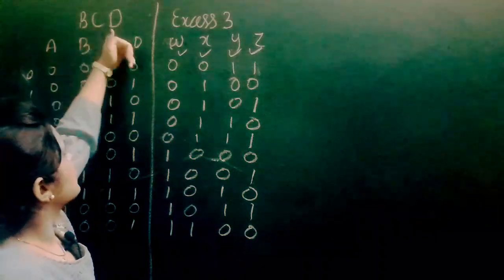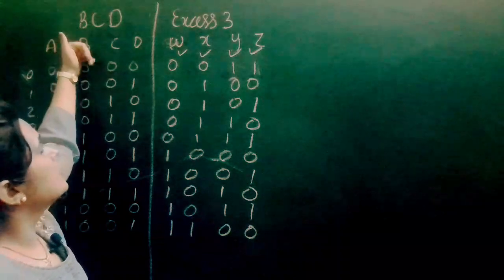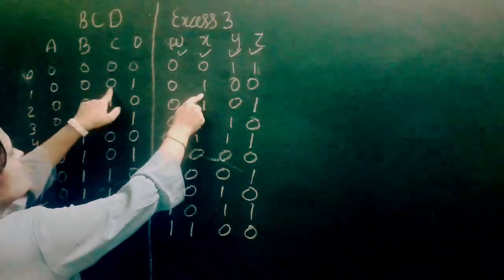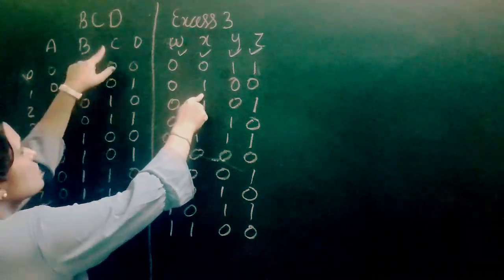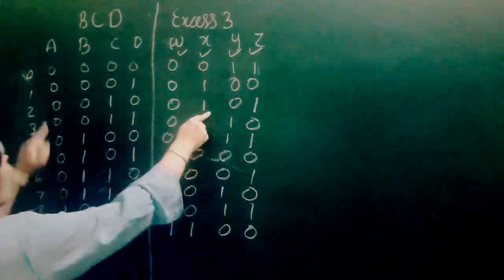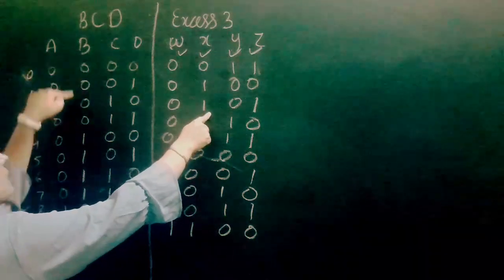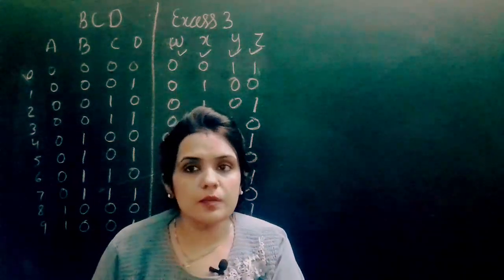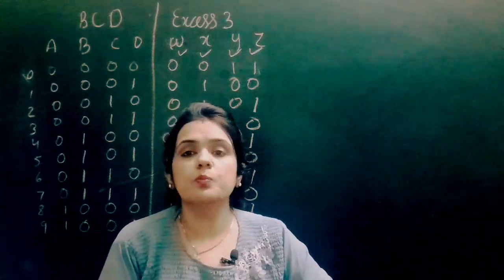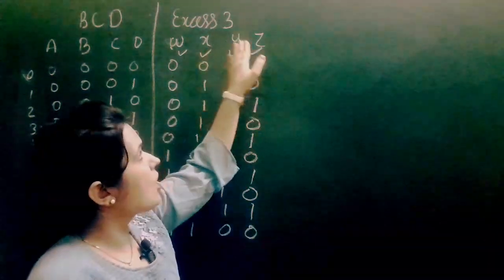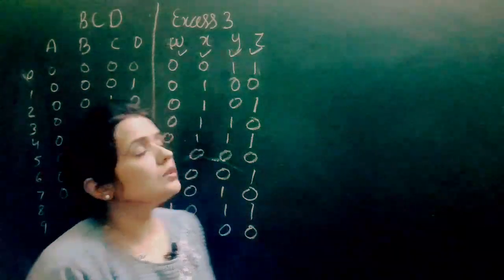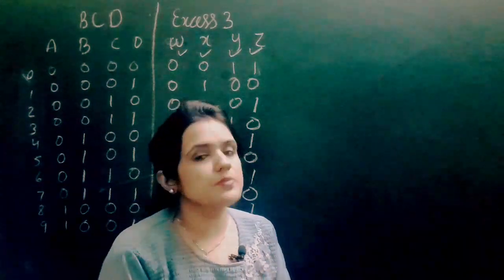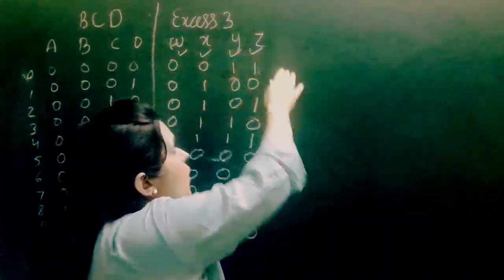For example, W depends on A, B, C, D. X is 1 when A, B, C, D takes certain values — such as when A is 0, B is 0, C is 0, D is 0, or when A is 0, B is 0, C is 1, D is 0. We can see that these outputs depend on the value of inputs. For obtaining the minimized Boolean output functions, we need to draw K-maps for these outputs. Since all outputs depend on four input values, we need to draw four-variable K-maps — one for each of the four outputs W, X, Y, and Z.